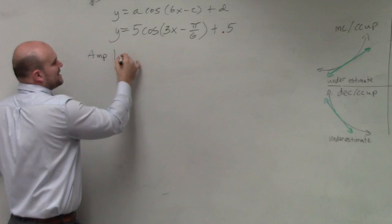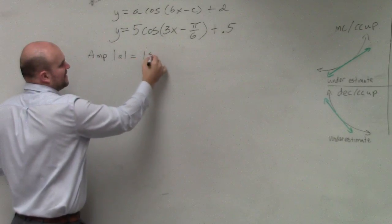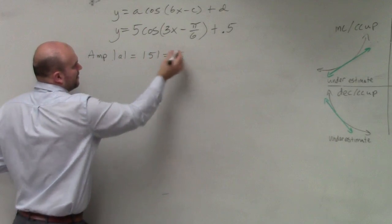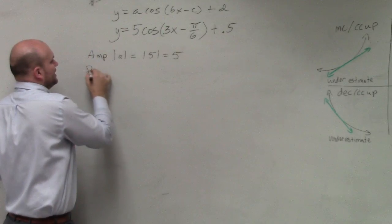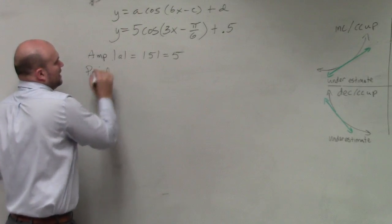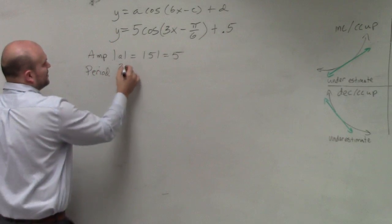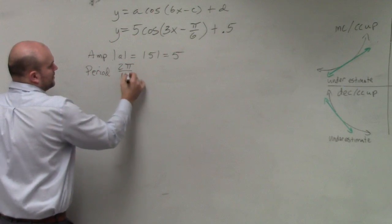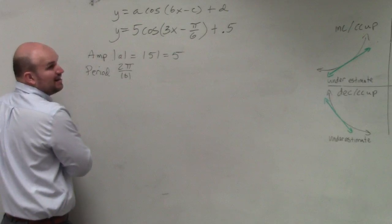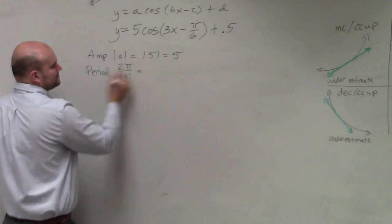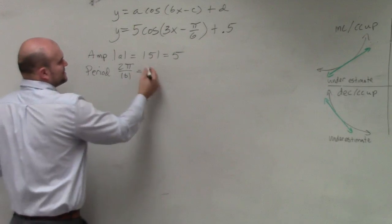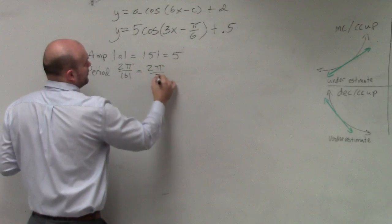So the amplitude here is the absolute value of a. So absolute value of 5 is just 5. Remember, for sine, cosine, cosecant, and secant, period is 2π divided by the absolute value of b. For tan and cotangent, it's π divided by absolute value of b. So this one is going to be 2π over 3.